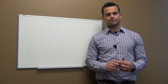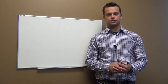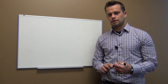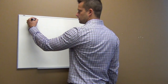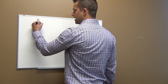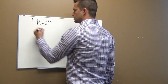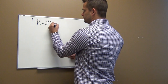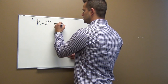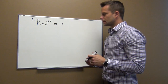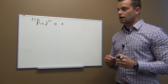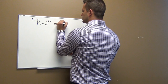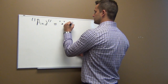Hi everybody. Right now I'm going to do a truth table for an AND statement. An AND statement in logic is represented by a dot, or in our textbook, an AND statement is represented by an ampersand.